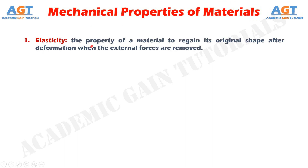Elasticity. It is defined as the property of a material to regain its original shape after deformation when the external forces are removed. It can also be referred as the power of material to come back to its original position after deformation when the stress or load is removed. It is also called as the tensile property of the material.